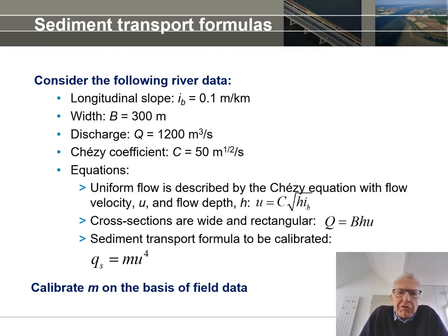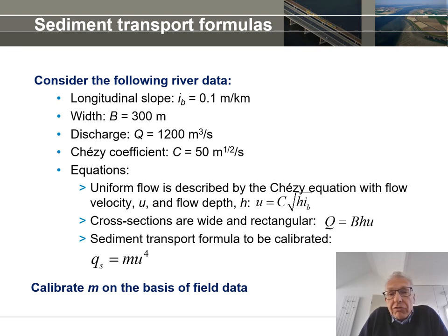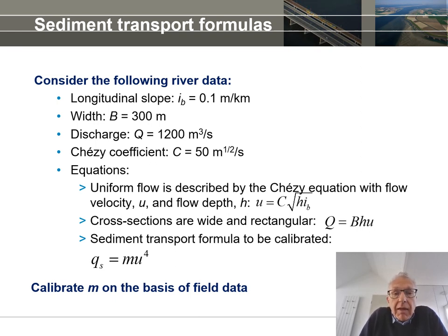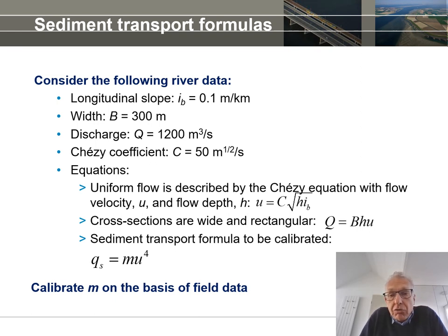Consider a river with the following data. There is a longitudinal slope of 10 centimeters per kilometer. The river is 300 meters wide and the discharge is constant at 1200 cubic meters per second. The hydraulic resistance is represented by a Chezy coefficient equal to 50 m^(1/2)/s. We are going to use equations for uniform flow, described by the Chezy equation, where flow velocity u is a function of flow depth h.